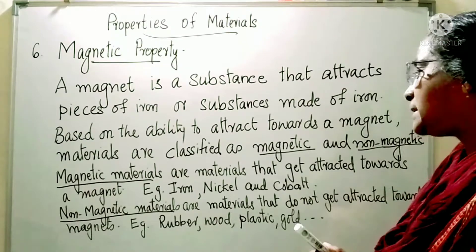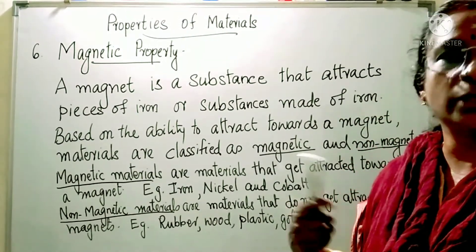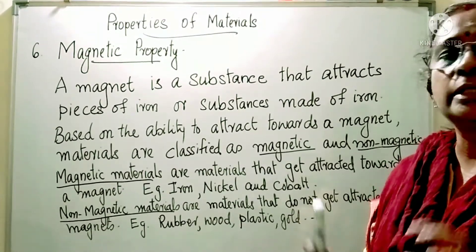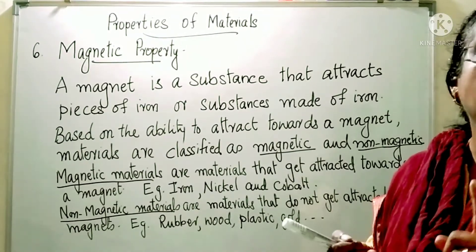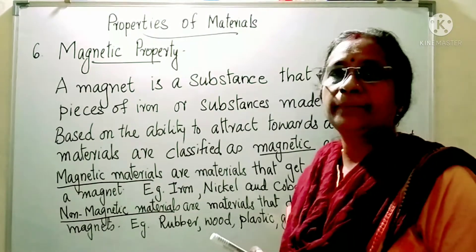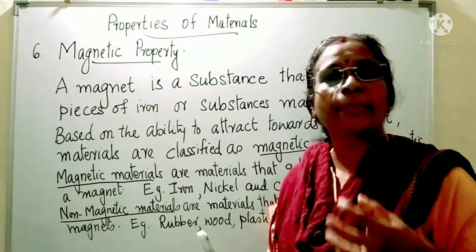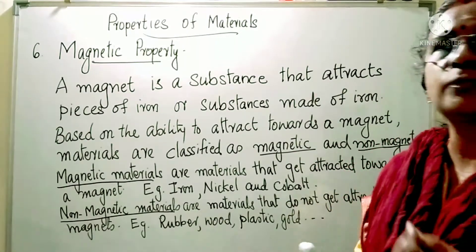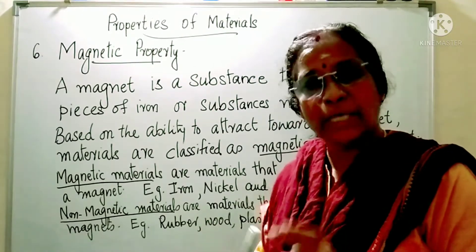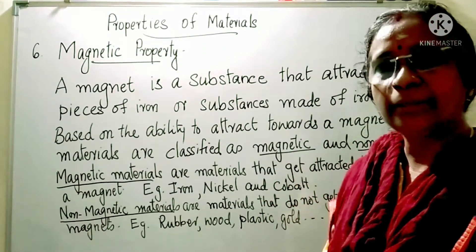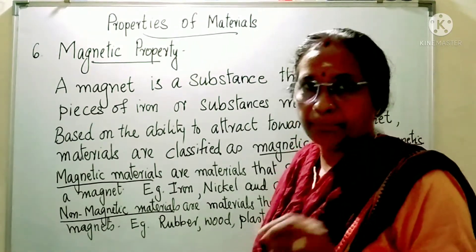Magnetic materials are the materials that get attracted towards the magnet. Usually, things which are made up of iron, nickel, or cobalt get attracted towards the magnet. You may not have heard the names of nickel and cobalt before — they are also some metals, just like iron.